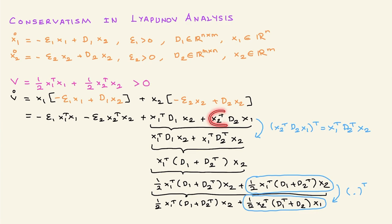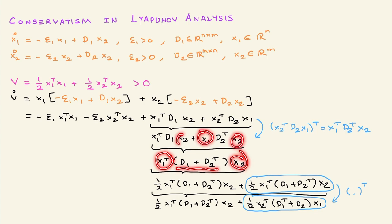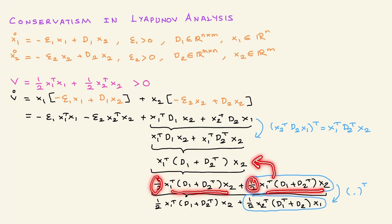First, I take the transpose of a scalar term — since it is scalar, it equals its own transpose — and I arrive at this expression. Then I combine d1 and d2-transpose since both are multiplied by x1-transpose and x2. I write this scalar as one-half plus one-half of the same scalar, summing them to produce the result. Finally, taking its transpose gives us d1, d1-transpose, one-half, one-half, d1-transpose, d2.